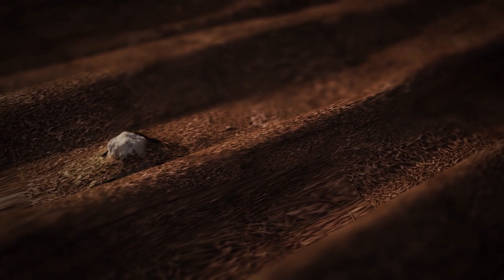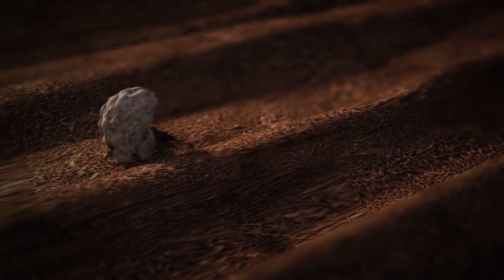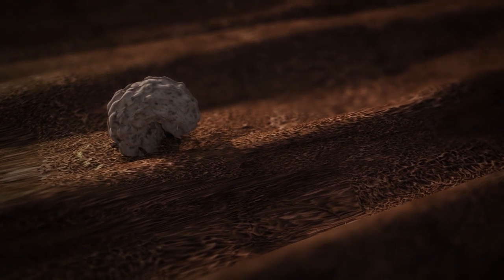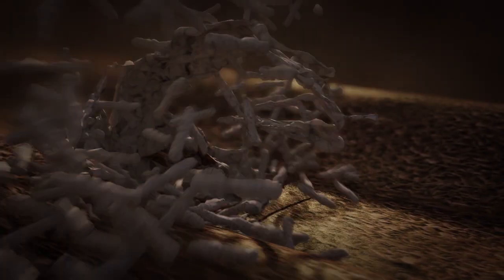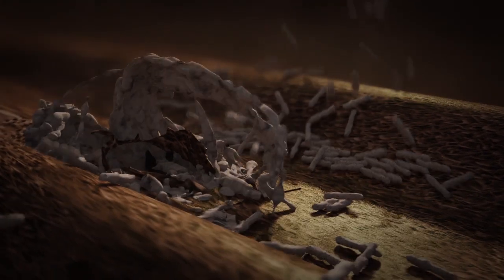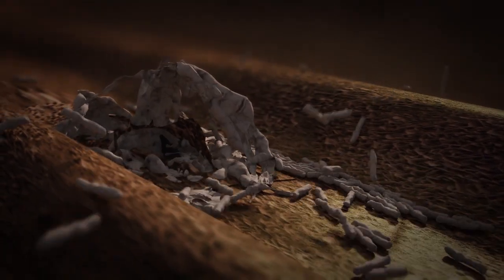In the final stage of the septoria cycle, fruiting bodies full of spores are formed. These spores can become airborne, or most frequently splashed onto adjacent leaves and plants.